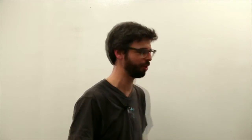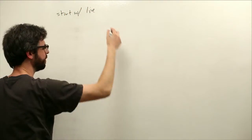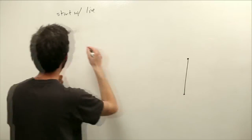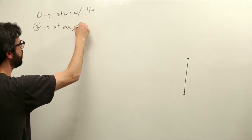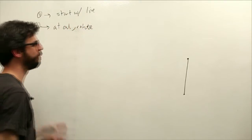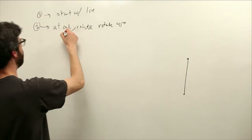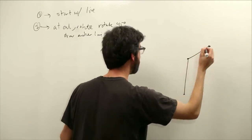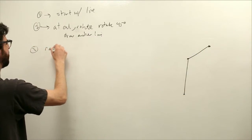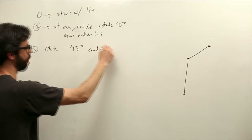So let's just first remind ourselves, what is the production rule? We start with a branch, which is a line. At the end of the line, that's one, and step two is at end, we rotate 45 degrees and draw another line. Then we rotate negative 45 degrees and draw a line.